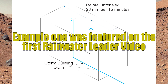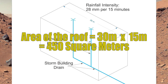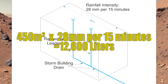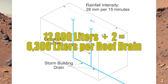This second example is pretty much exactly the same as the first one, except I have two rainwater leaders. The math is all the same: a 30-meter by 15-meter roof, or 450 square meters, multiplied by the rainfall intensity of 28, equals 12,600 liters. But since I have two rainwater leaders, 12,600 divided by 2 equals 6,300 liters per rainwater leader.